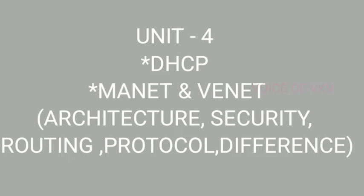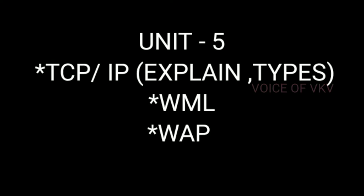In MANET and WANET, there are all the architecture, security, routing, and protocol differences between MANET and WANET. In the fifth unit, there are three important topics, which are TCP and IP. You can explain the types of TCP and IP. There is also WAP and WML.